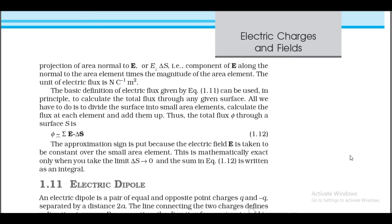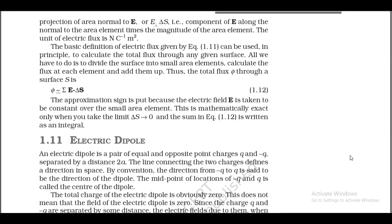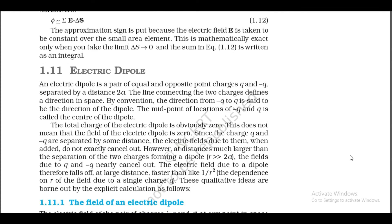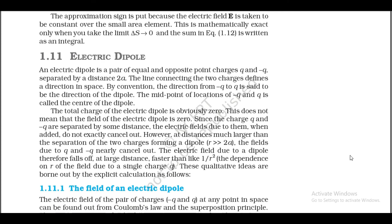The approximation sign is used because E is taken to be constant over the small area element. This is mathematically exact only when we take the limit ΔS → 0 and the sum in equation 1.12 is written as an integral.